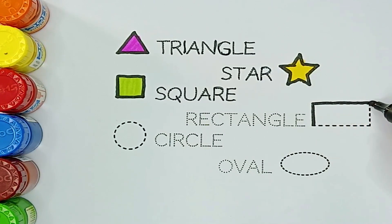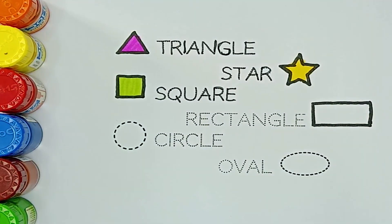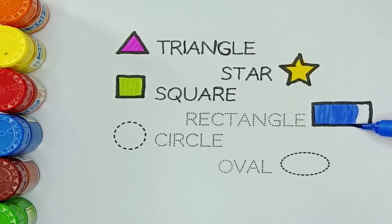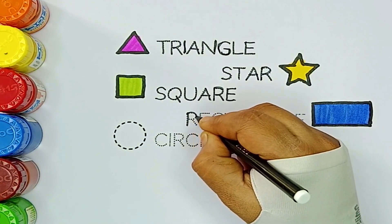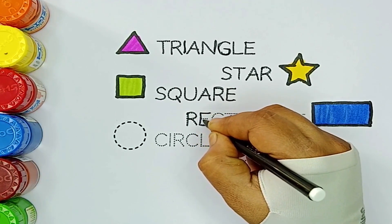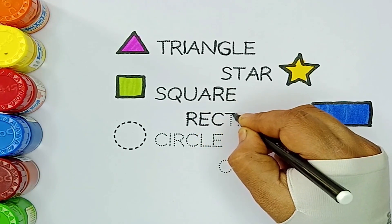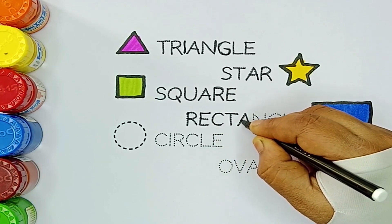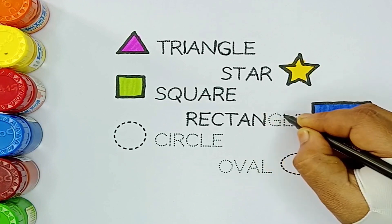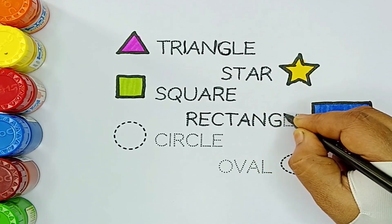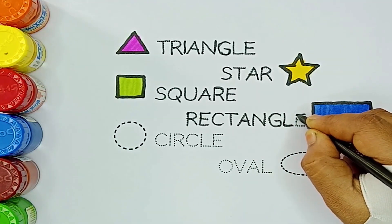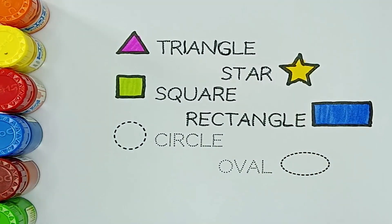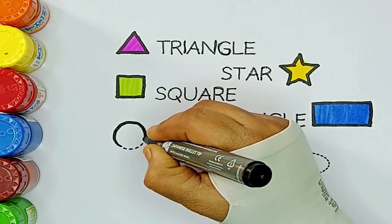Rectangle. Mauve color. R-E-C-T-A-N-G-L-E. Circle.